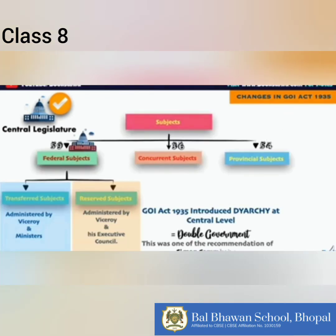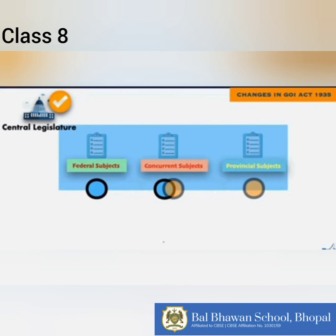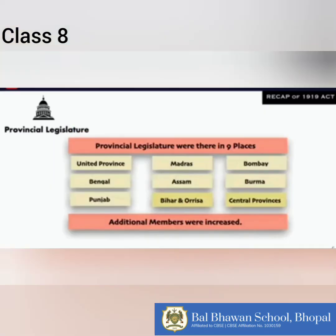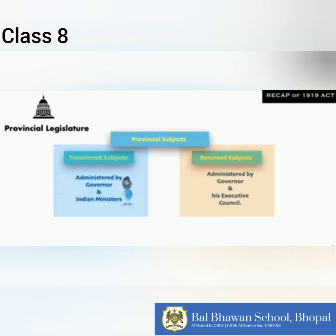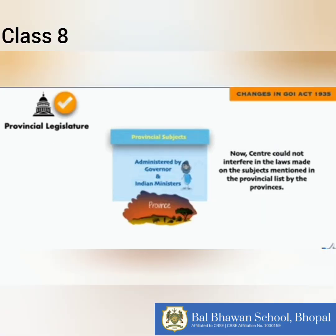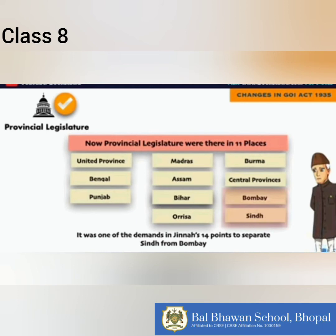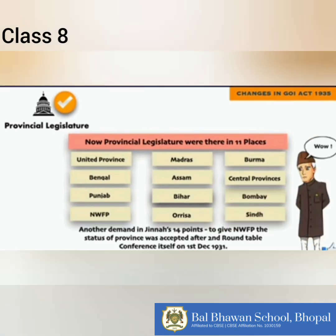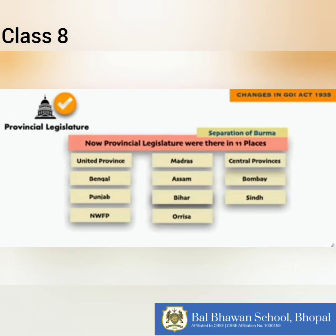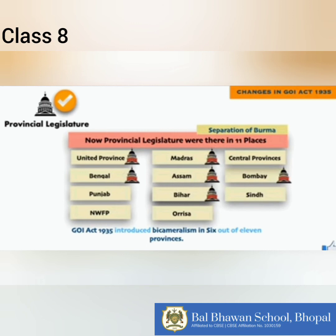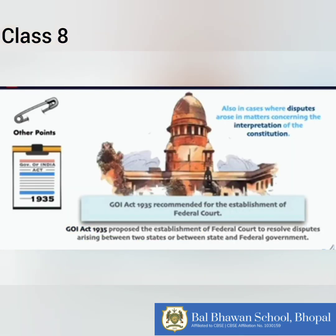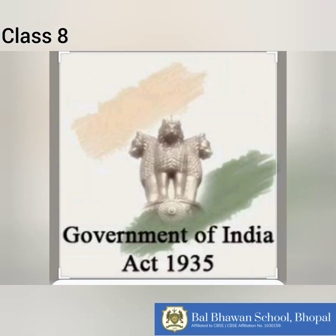These ministries did useful work in the field of education and upliftment of the Harijans. We can conclude that the Government of India Act 1935 was a detailed document. Even though the Congress opposed the provisions of the Act, it decided to contest the elections. Out of eleven provinces, Congress had its sway in seven provinces. This proved to the British government that the Congress was still the most popular political party in the country.